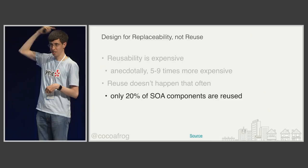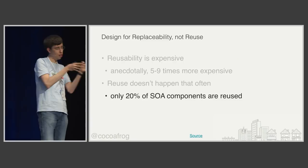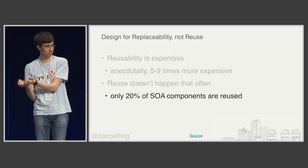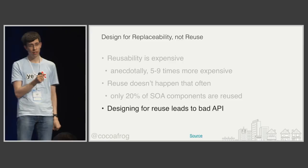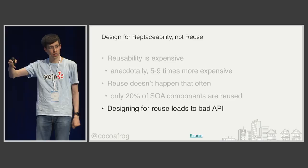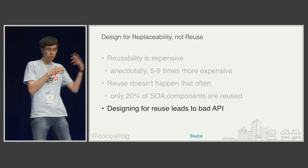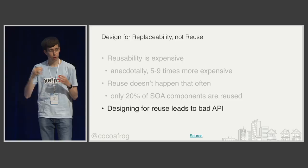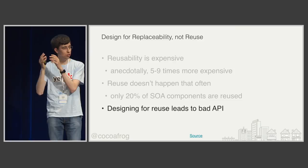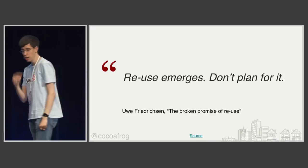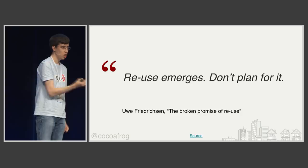So only 20% of components are actually reused — from a business point of view, reuse already doesn't make sense. But worst of all, designing for reuse leads to bad APIs. If you design for reuse upfront, before knowing how it will be used, all you can do is expose your implementation for others to reuse — making it implementation-driven rather than client-driven. Also, because you don't know which part will be reused, you'll expose everything, making it far more complex than necessary. As Uwe Fritesen writes: 'Reuse emerges, don't plan for it.' Once you actually reuse stuff, it makes sense to extract and unify it — but don't do that upfront.